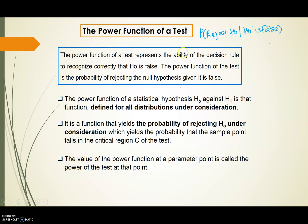The power function of a statistical hypothesis H0 against H1 is the function defined for all distributions under consideration — it can be a normal distribution, binomial, or Poisson. It is a function that yields the probability of rejecting H0 under theta, whether theta is true or false. This may yield the probability that the sample point falls in the critical region of the test.